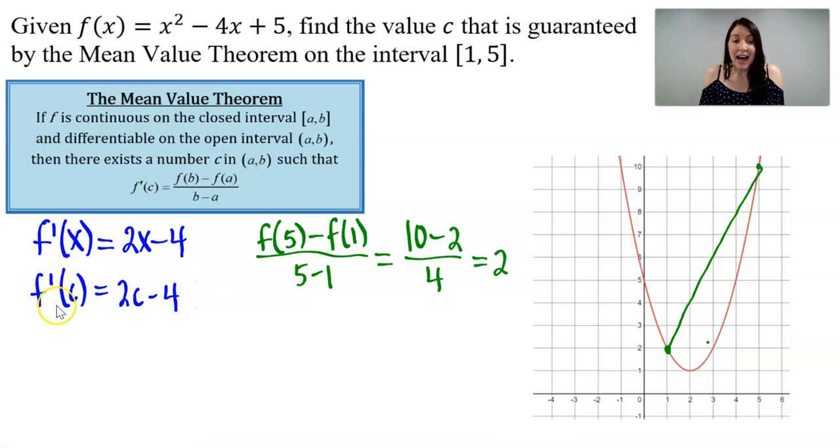So now if I set the derivative, the slope of the tangent line, equal to the slope of the secant line, I can find where that c value will occur. So if I set 2c minus 4 equal to 2, that gives me 2c equals 6, or c equals 3.